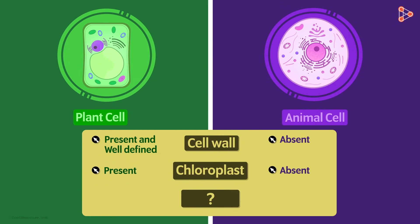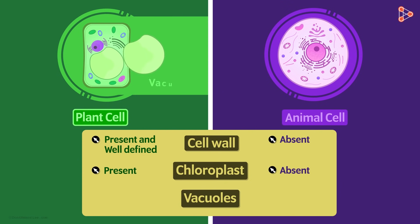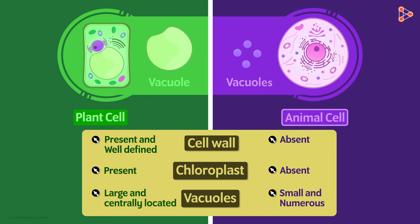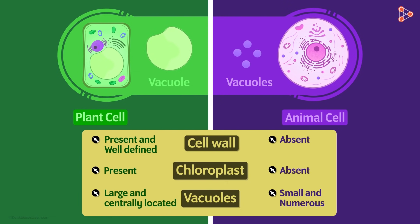The third difference is the presence of vacuoles. Both plant and animal cells contain vacuoles. However, in plant cells the vacuole is a large one located at the centre, while in animal cells there are numerous small-sized vacuoles. The central vacuole can occupy the majority of the cell space, pushing other organelles to the periphery. In animal cells, the vacuoles are much smaller in size and are scattered throughout the cytoplasm.